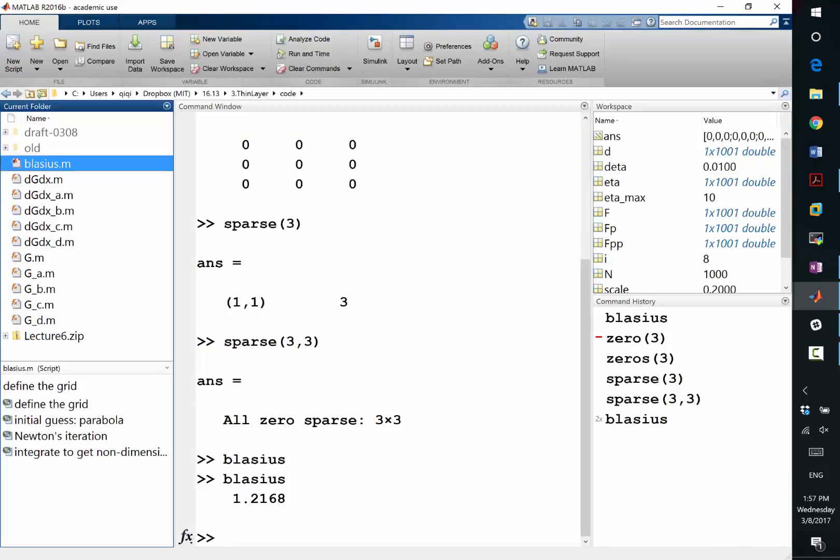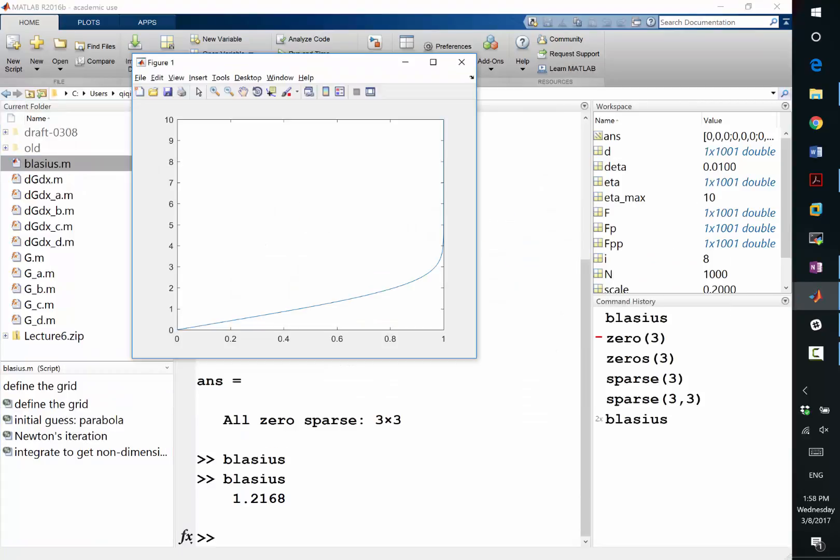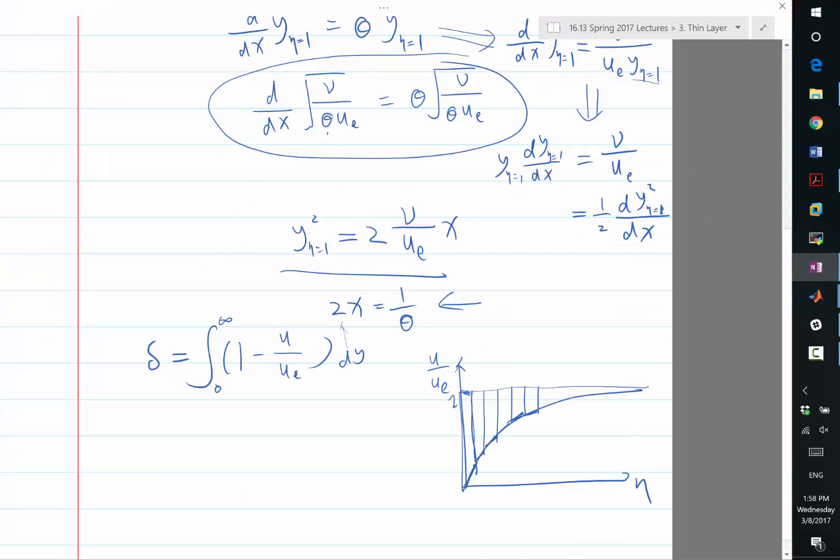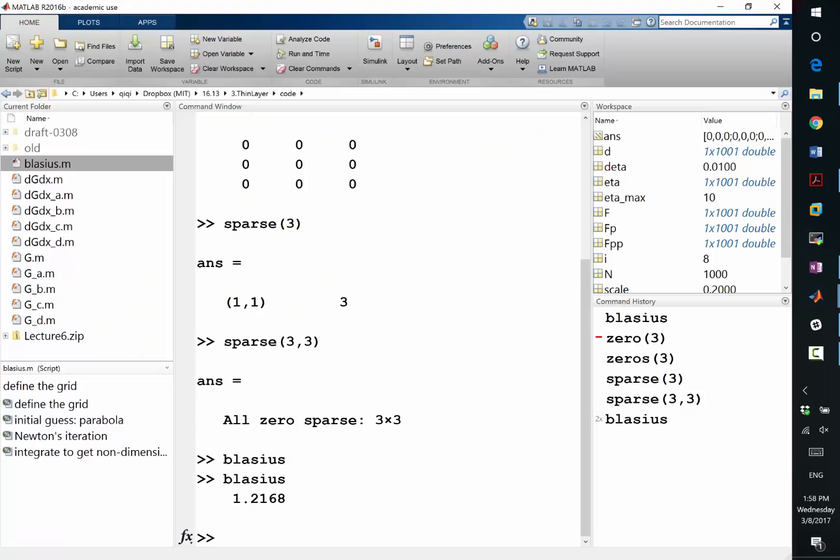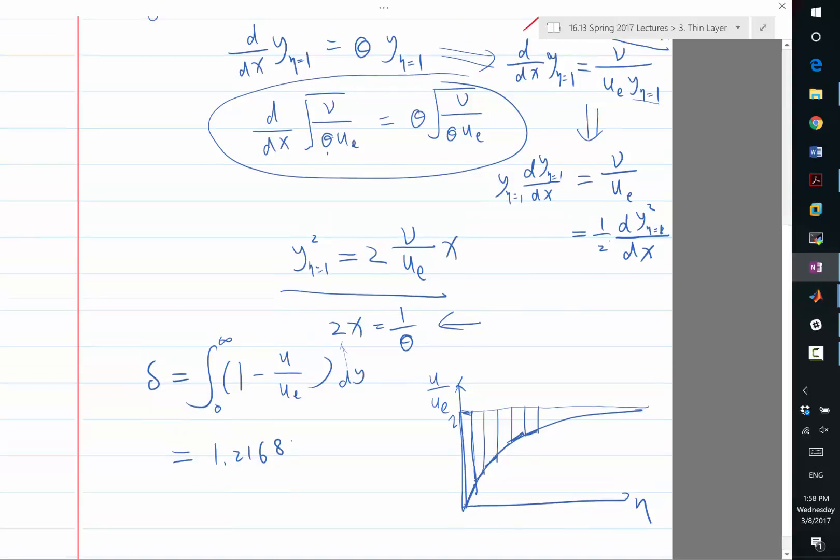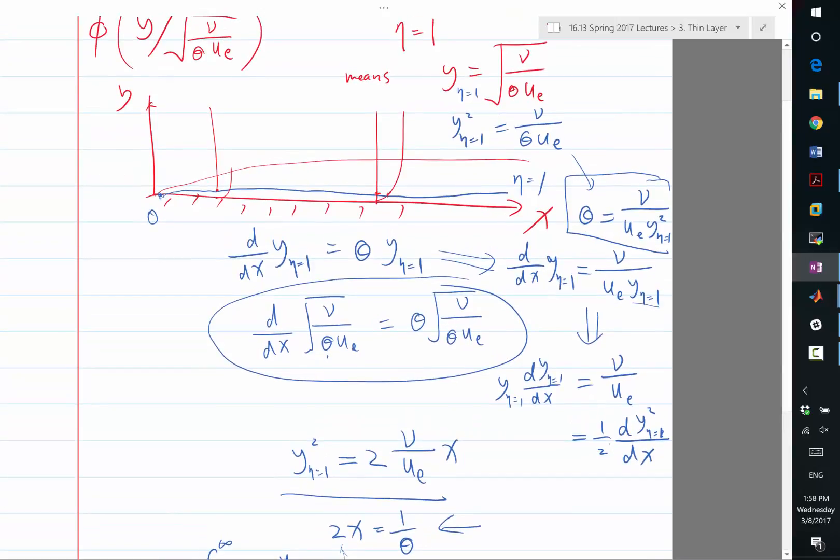This is what I got. All right, so my displacement thickness is about 1.2 here. It's 1.2168 times the square root of that.